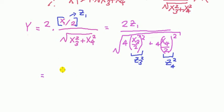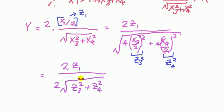Let's tidy this up. We've got 2z1 on the top. We said on the bottom, the square root of 4 is 2, that's a common factor that comes out. And then here is the square root of z3 squared plus z4 squared. So this is the same as Y. But we see from this that those two 2's cancel.